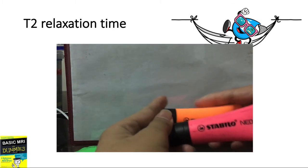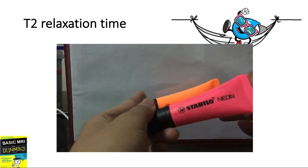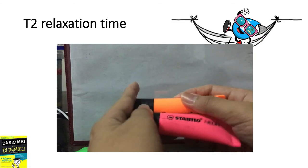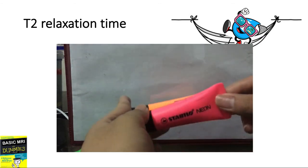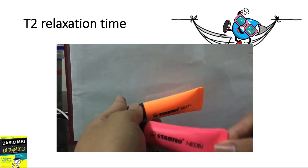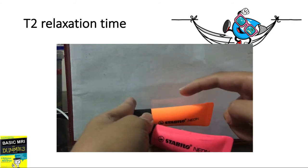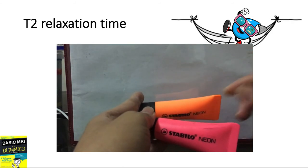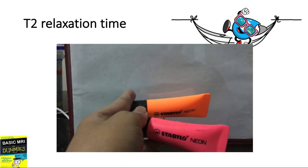What will happen is that it will transfer some of its energy toward a nearby proton. This is what we call spin-spin relaxation.